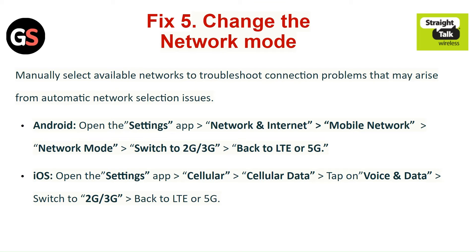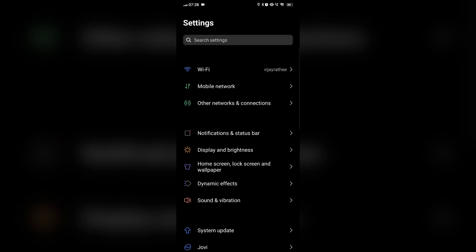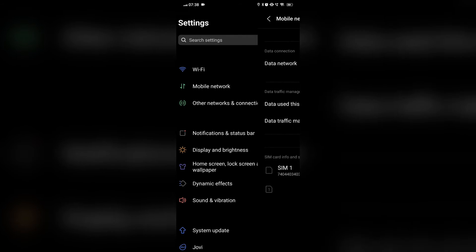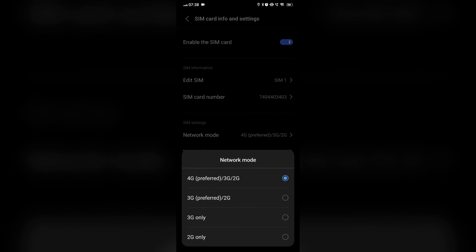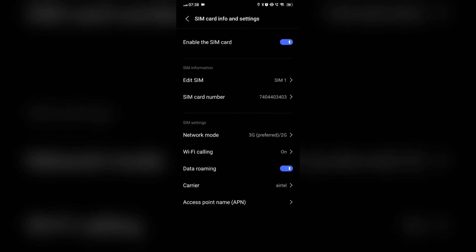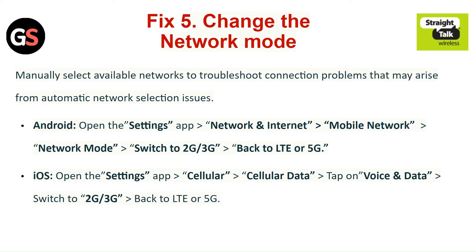Fix 5: Change the network mode. Manually select the available networks to troubleshoot connection problems that may arise from automatic network selection issues. For Android, go to the Settings app, then click on Network and Internet, then Mobile Network. Go to the Network mode and switch to 2G or 3G, then turn back to LTE or 5G. For iOS, open the Settings app and go to Cellular, then Cellular Data. Tap on Voice and Data, switch to 2G or 3G, and then turn back to LTE or 5G.